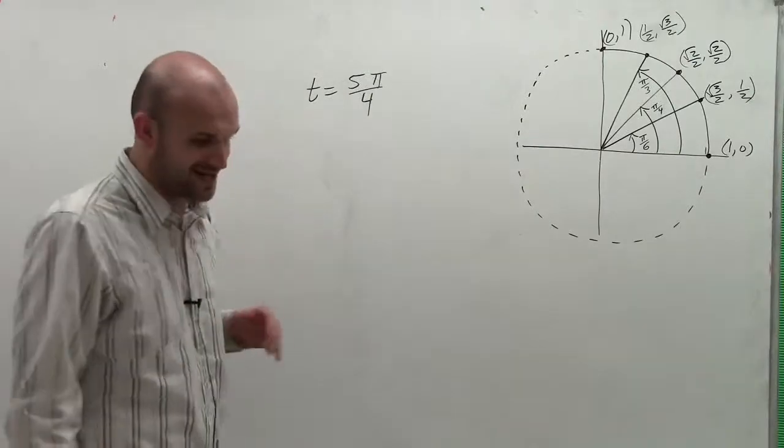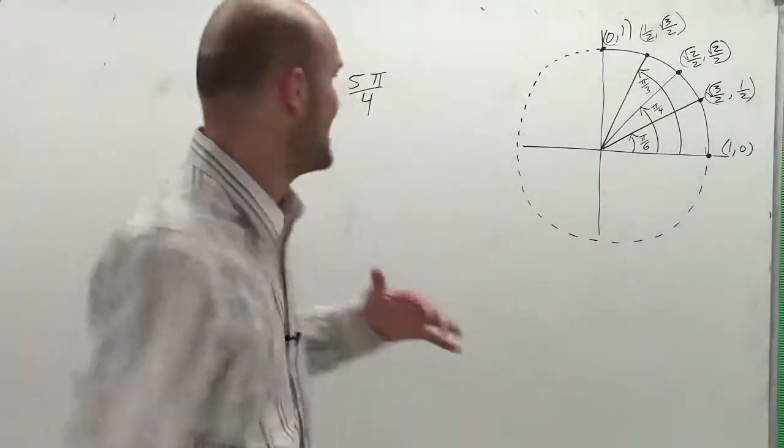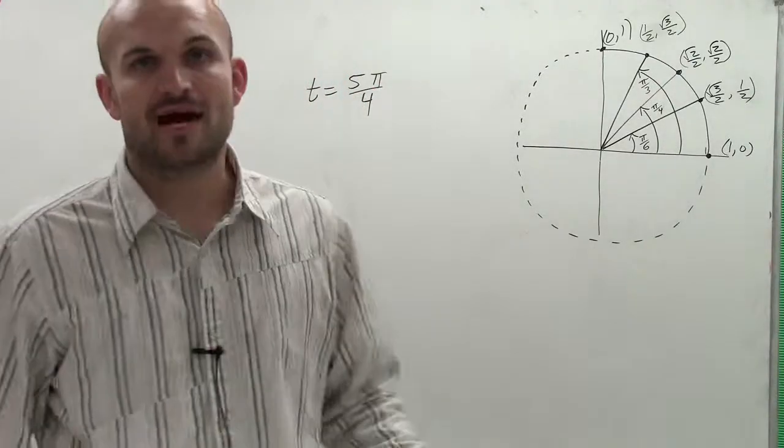Here we go. So it says find the point on the unit circle that corresponds to the angle t equals 5π/4.